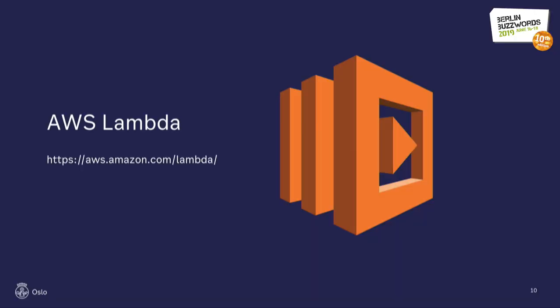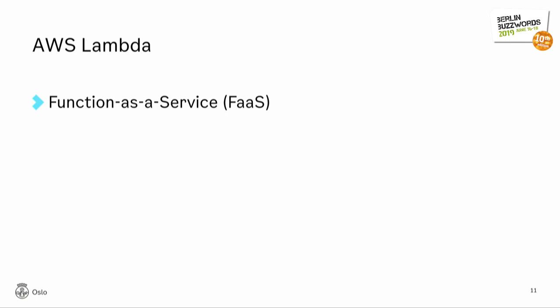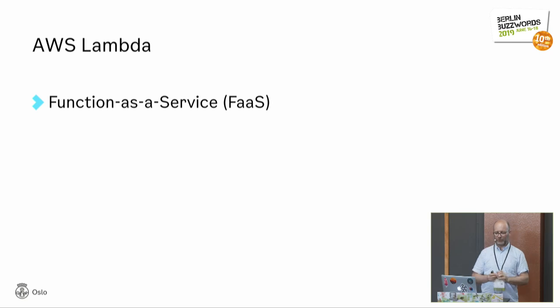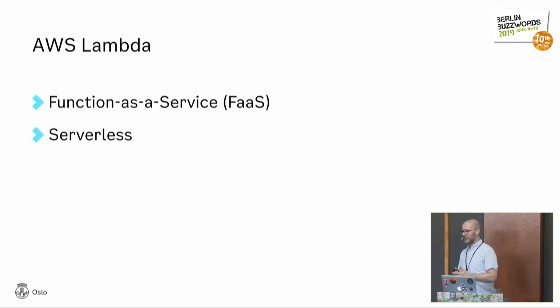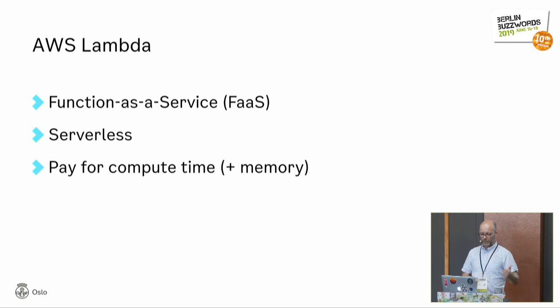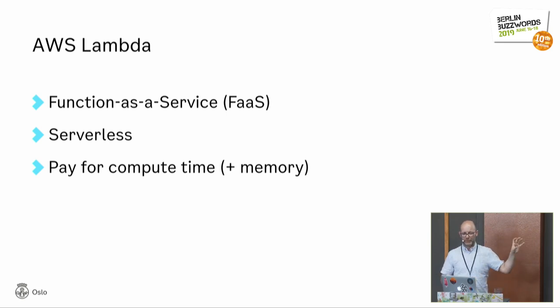Lambda is a compute service in Amazon Cloud that lets you deploy and run simple functions. You upload functions and have them run based on various events or triggers, as opposed to uploading a container or Docker image. It's serverless — no servers to manage. Amazon handles all the scaling for you. You pay as you go for the amount of compute and memory you use, charged per one-tenth of a second.